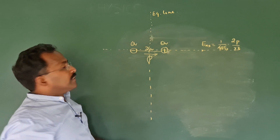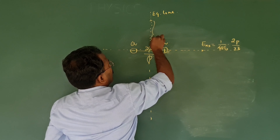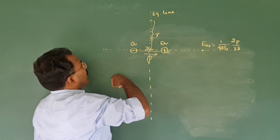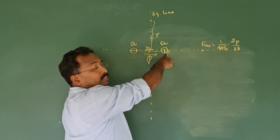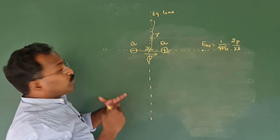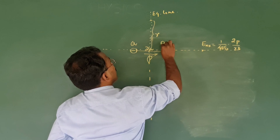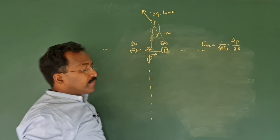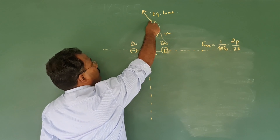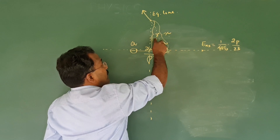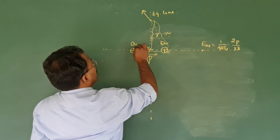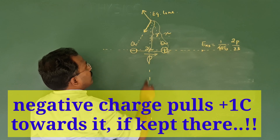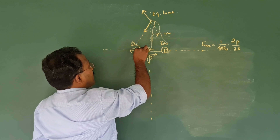Now I go to the equatorial line. I take a point here which is again at a distance R from the center. Remember, the distances are always taken from the center of the dipole. Both the negative charge and the positive charge produce the electric field there. The positive charge produces an electric field in one direction. I take this distance to be x because in my calculation this point and this charge are at x distance away. Remember, x and r are different. The negative charge also produces an electric field here in another direction. This is the direction of the electric dipole moment and this angle I take as theta.